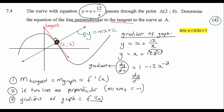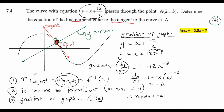Plugging in x equals two: it's going to be one minus 12 times two to the power of minus two. Type that into your calculator and that gives us negative two. So the gradient of the graph is equal to negative two. The gradient of the graph is always the same as the gradient of the tangent, so the gradient of the tangent is also negative two.